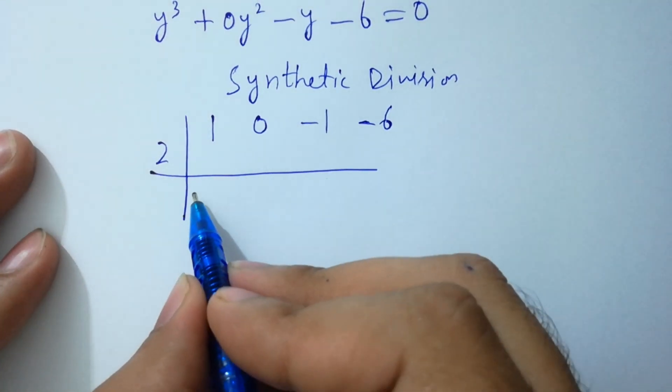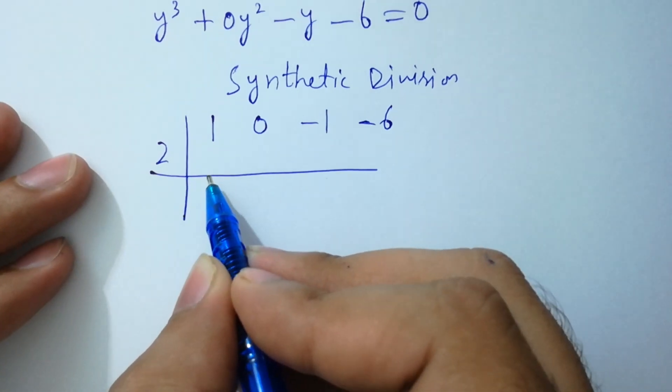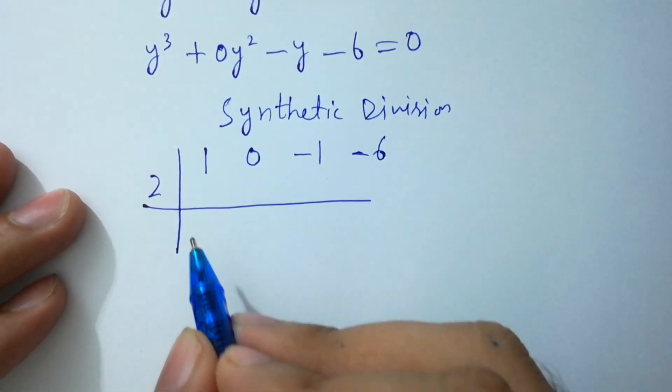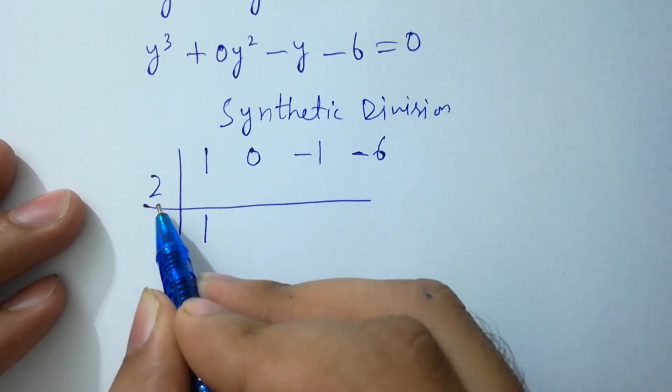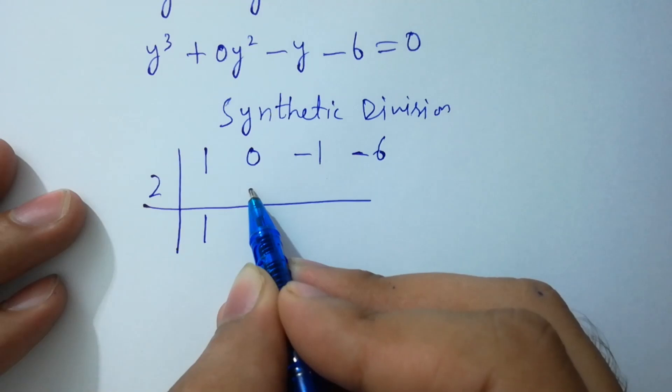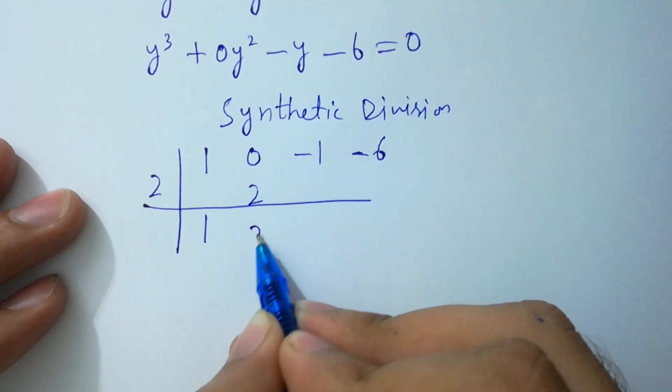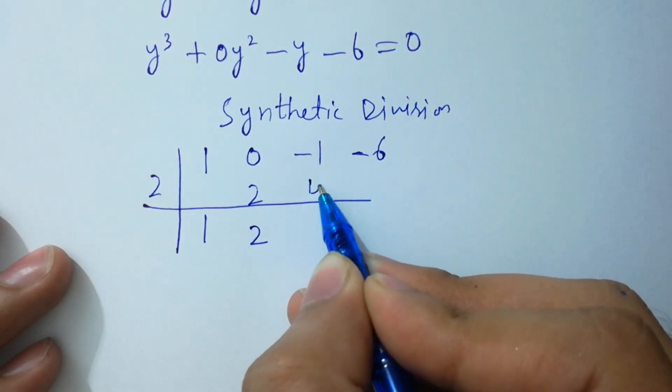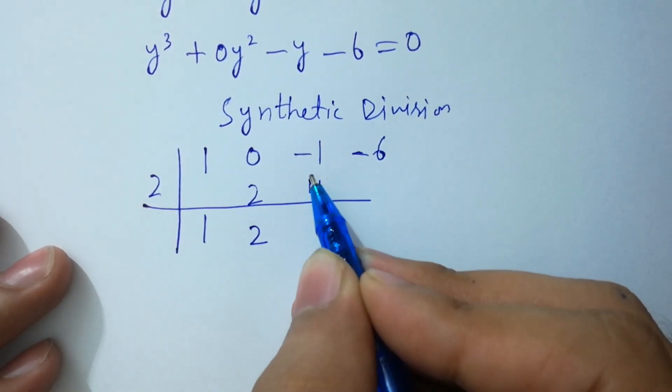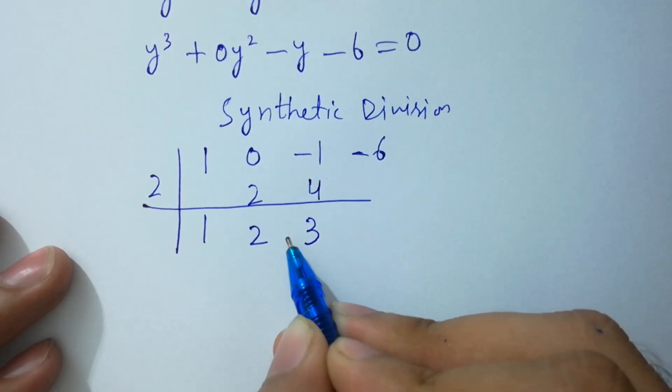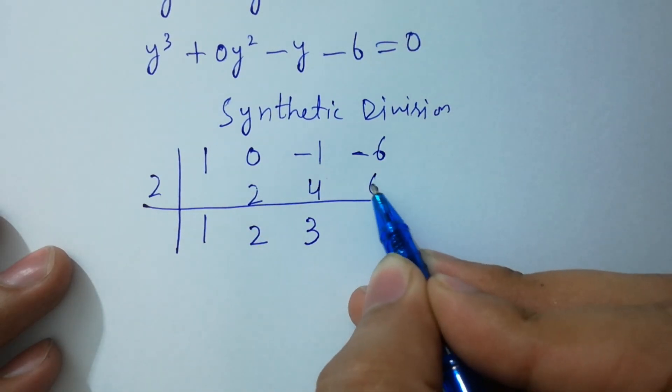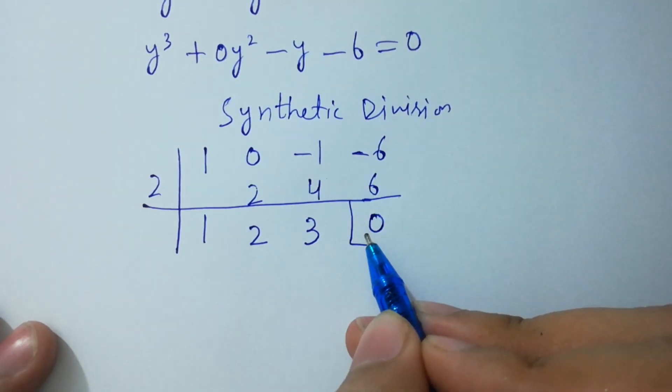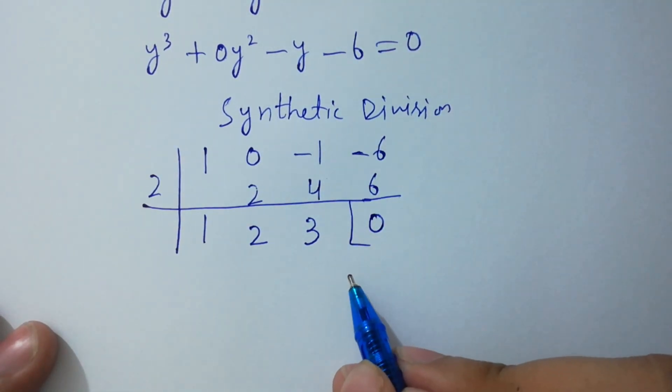Method is very simple, in this case we have 1, 2 times 1, 2, 0 plus 2, 2, 2 times 2, 4, minus 1 plus 4 plus 3, 3 times 2, 6, minus 6 plus 6, 0. This means there is no remainder.